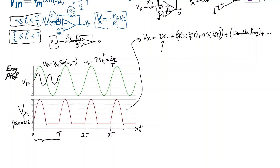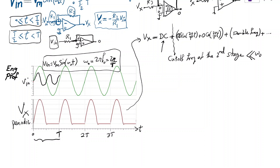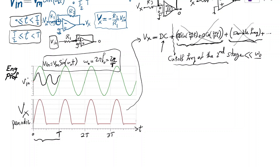If the cutoff frequency of the second stage is designed to be substantially less than omega_naught — the frequency of the incoming sinusoid — then all of the AC sinusoidal components (at omega_naught, 2*omega_naught, etc.) will be blocked. Only the DC portion of VX gets through to the output, with the remaining ripple becoming negligible.